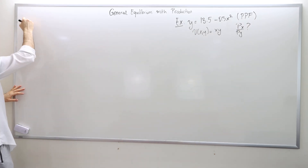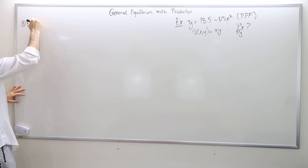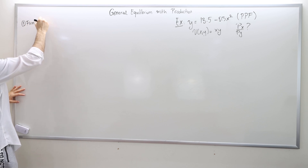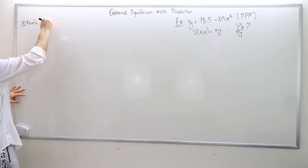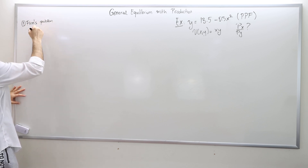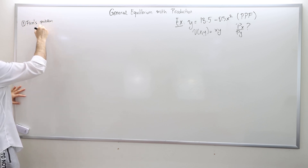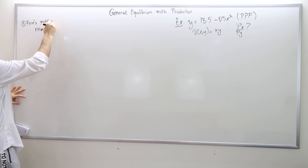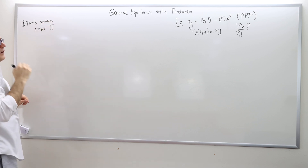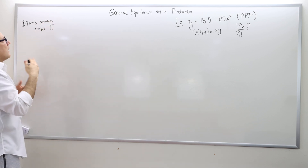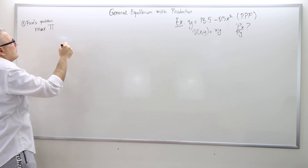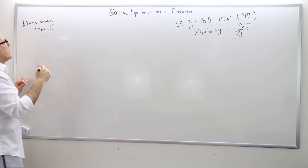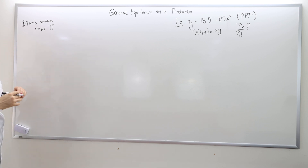Problem one: the firm's problem. The problem of the firm is to maximize the profit, subject to the constraint. What is the profit?